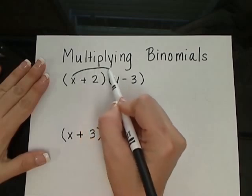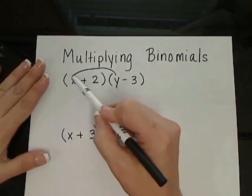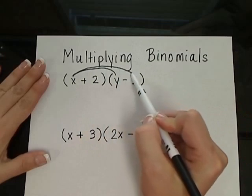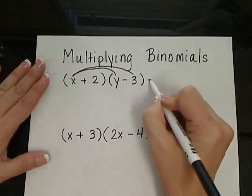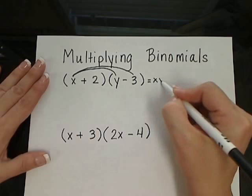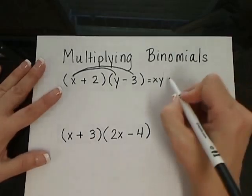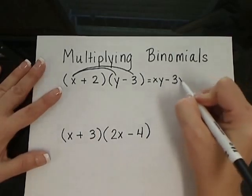So I'm going to be multiplying the x times the y, as well as the x times the minus 3. The x times y will give me xy. The x times the minus 3 will give me minus 3x.